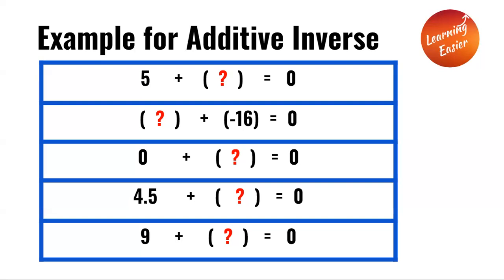9 plus a number equals zero. That number would be negative 9, as negative 9 is the additive inverse of 9, and vice versa.